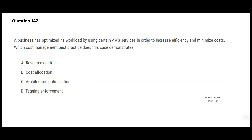Whenever you see such questions, always think about OTT platforms like Netflix and Amazon Prime. Next question: there is already an optimization carried out for workloads — it is trying to increase efficiency and minimize cost. The question asks what cost management best practice can you demonstrate. Option A — resource controls — is not a cost management best practice, because if you need certain resources, you need them.